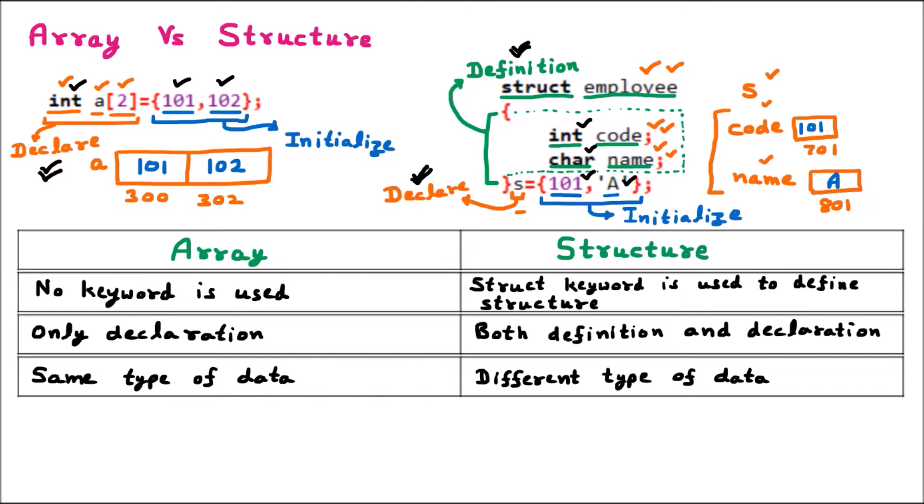All elements in an array can be integer or all can be character, but in structure we can have integer, float, and character together depending upon the definition of structure. In our example we used integer and character, so structure is taking two different data types — one integer and one character.